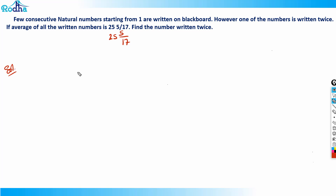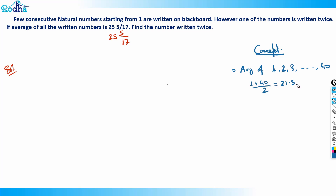Let me discuss the underlying concepts one by one. The first concept is: once you take the average of consecutive natural numbers — for example, average of 1 to 40 — the average is first term plus last term divided by 2, which is 21.5. So the average is roughly double the count of numbers, or said differently, the count is roughly double the average.